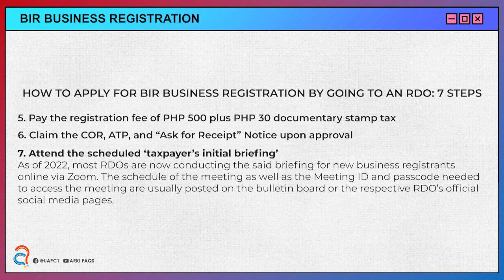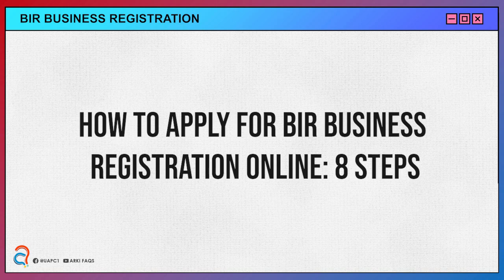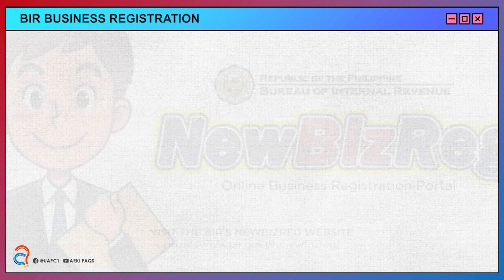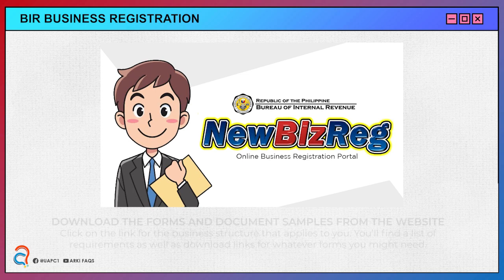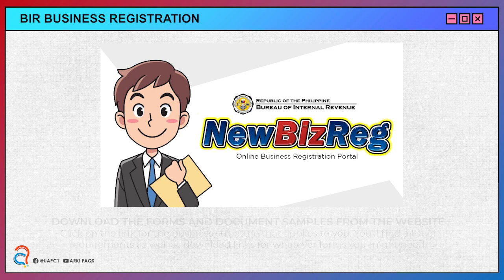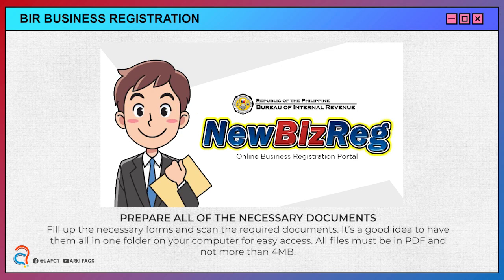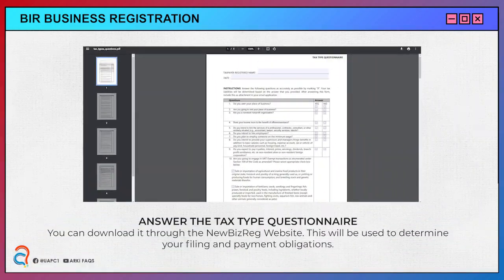Attend the scheduled taxpayers initial briefing. Here are the steps for applying BIR business registration online. Visit the BIR Nubizreg website. Download the forms and document samples from the website and prepare all necessary documents. Answer the tax type questionnaire.